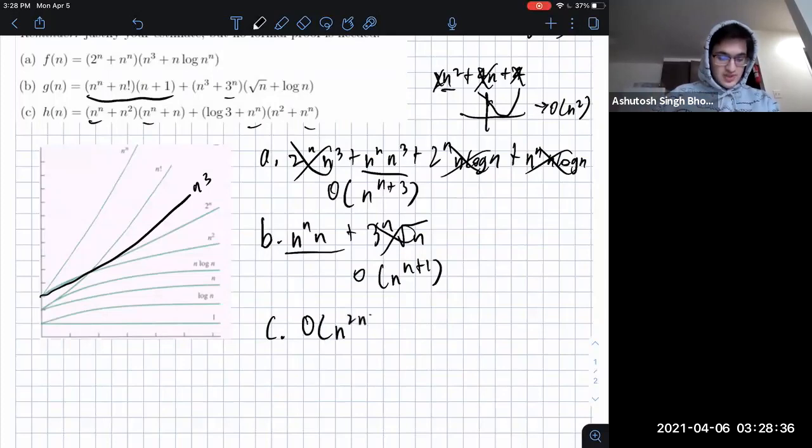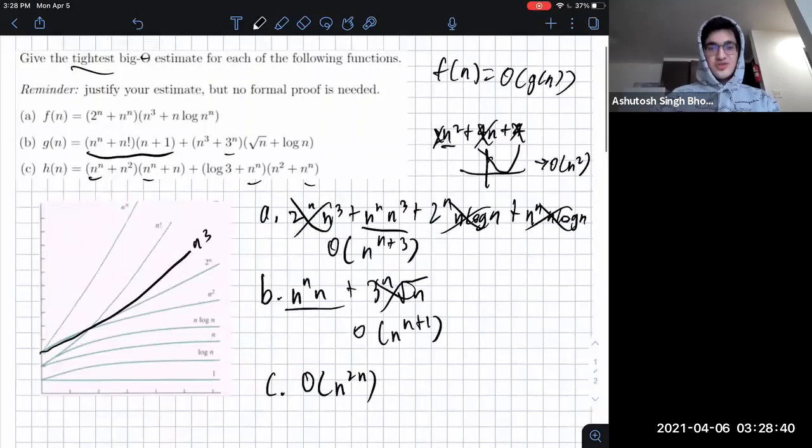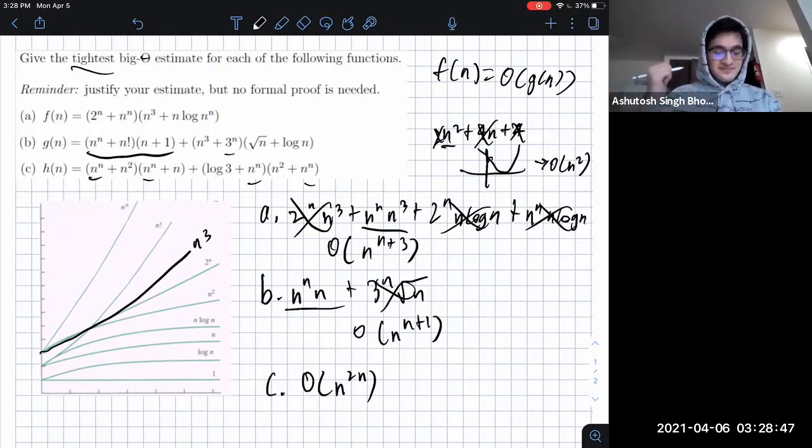So, which by the way is an absolute garbage complexity. Like, I hope that when you code things, you never have a complexity of O of n to the 2n, because that might just blow up your computer. So, yeah.